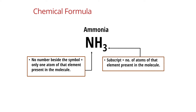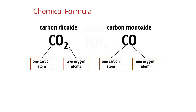Here are some more examples. We have carbon dioxide, CO2. In each molecule of carbon dioxide there is one carbon atom and two oxygen atoms. Carbon dioxide is a compound because there are two different elements — carbon and oxygen — that are chemically combined together. For carbon monoxide, the formula is CO, which means one carbon and one oxygen per molecule.